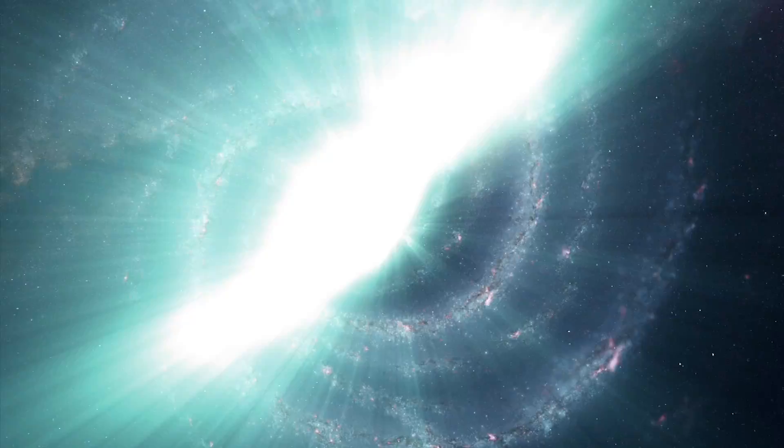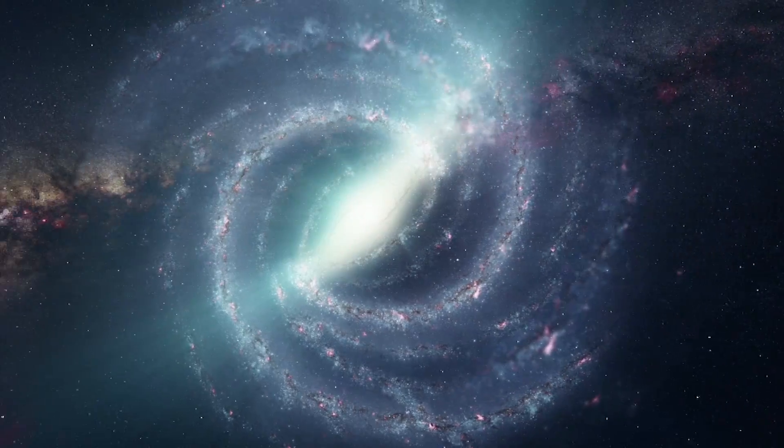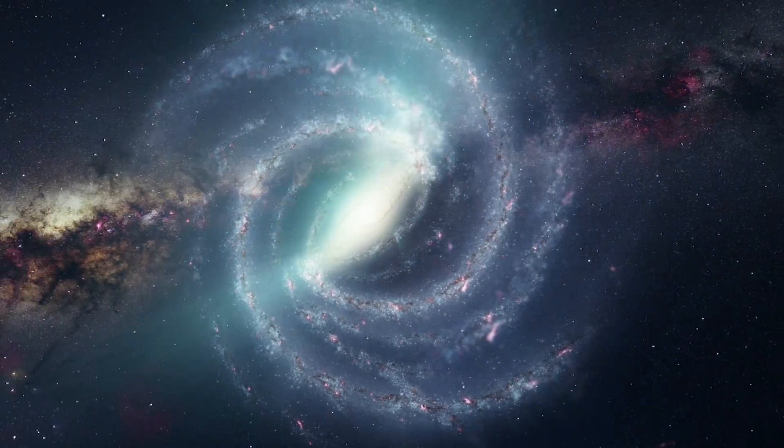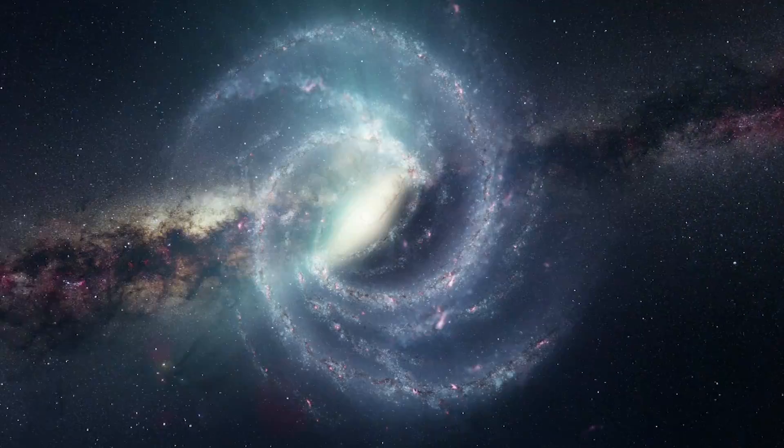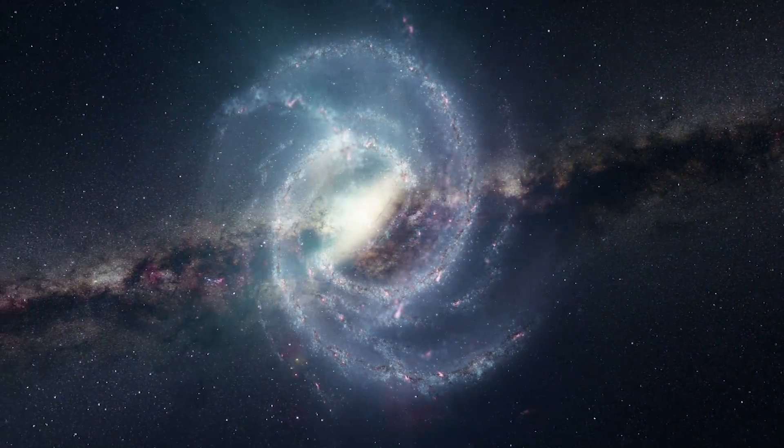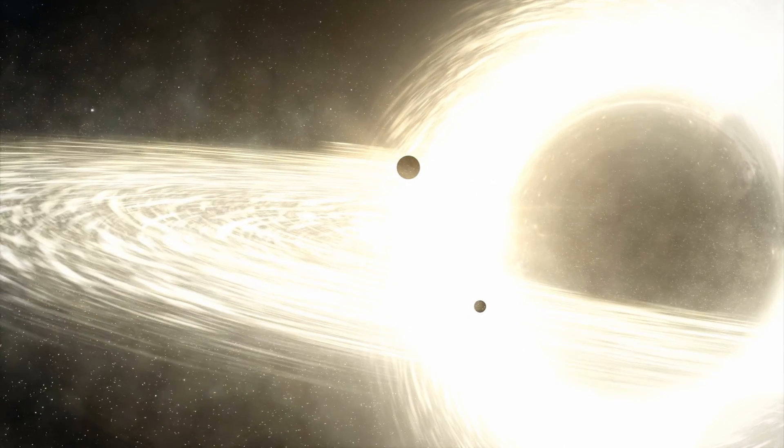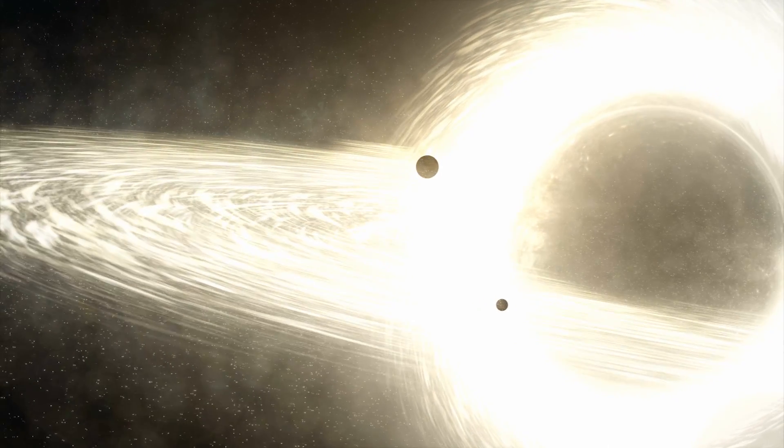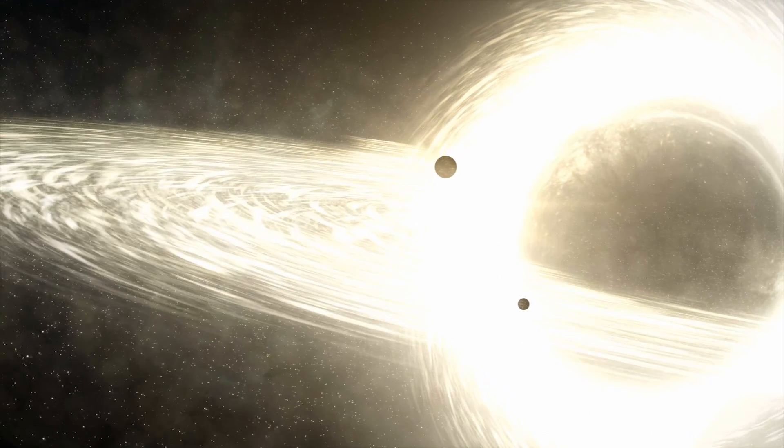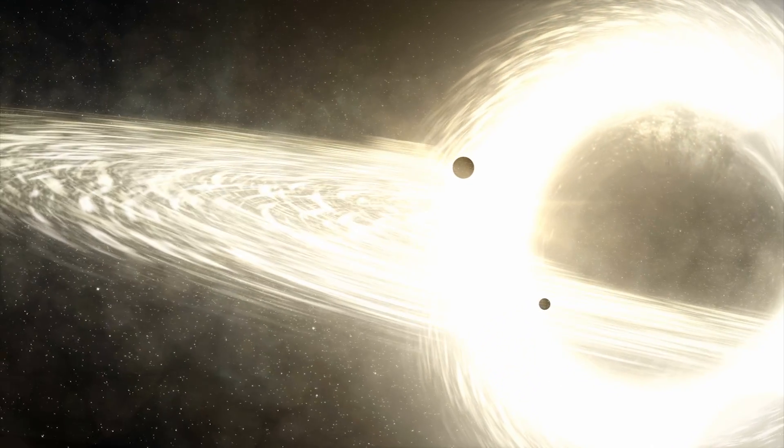The so-called Fermi bubbles contain enough cool gas to create about 3 million sun-sized stars. It's not entirely clear why the bubbles exist, but scientists think they could be linked to the frenzy of star death and formation in the region around Sagittarius A, which contains a supermassive black hole.